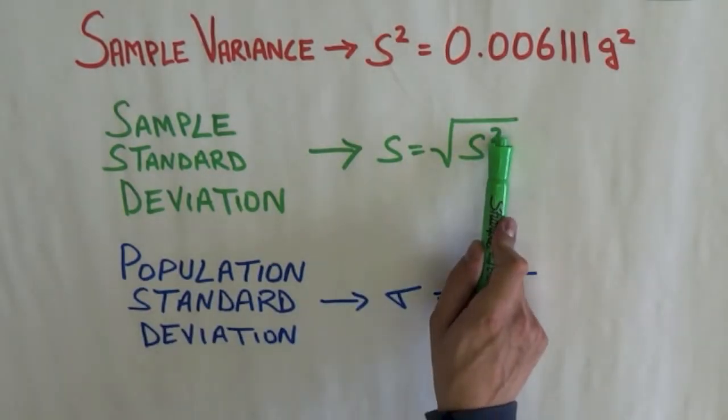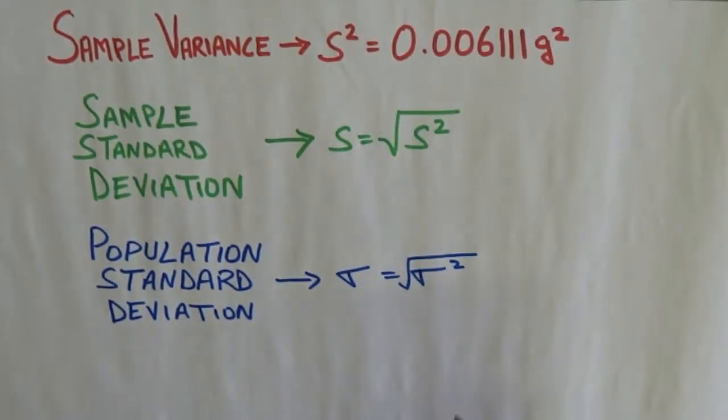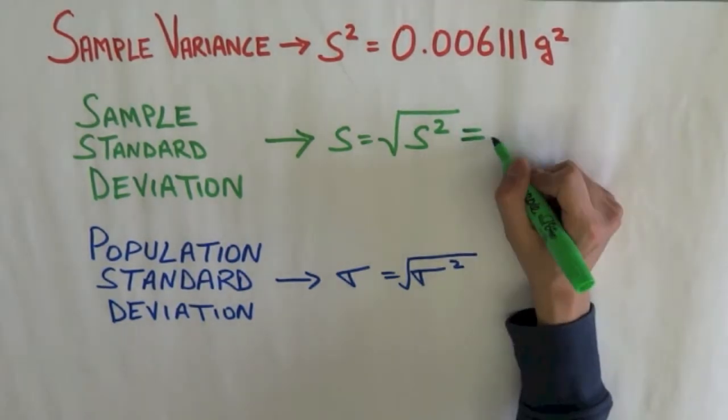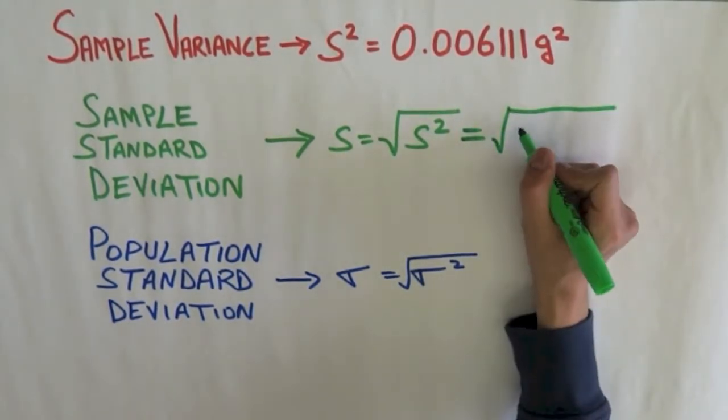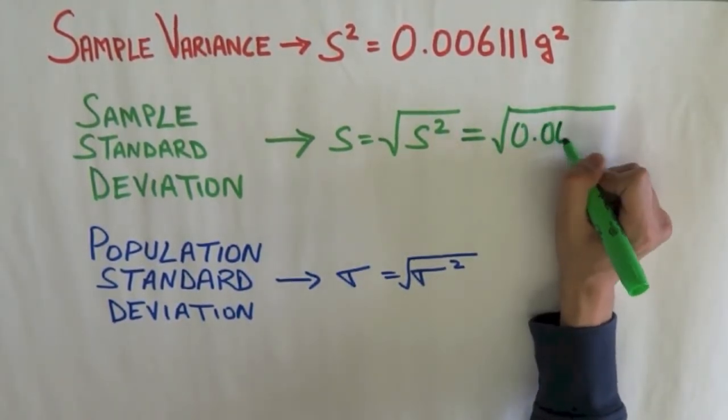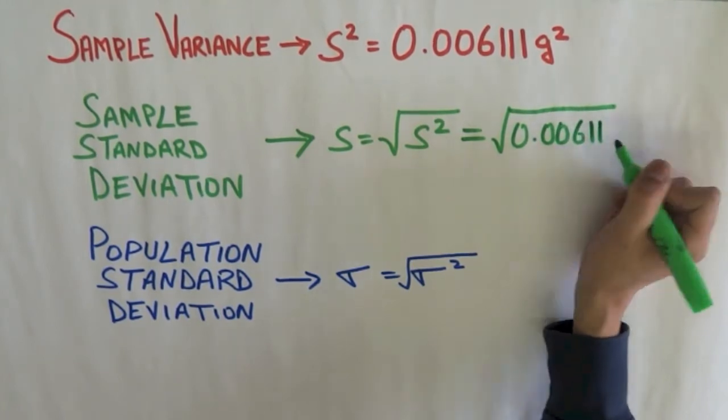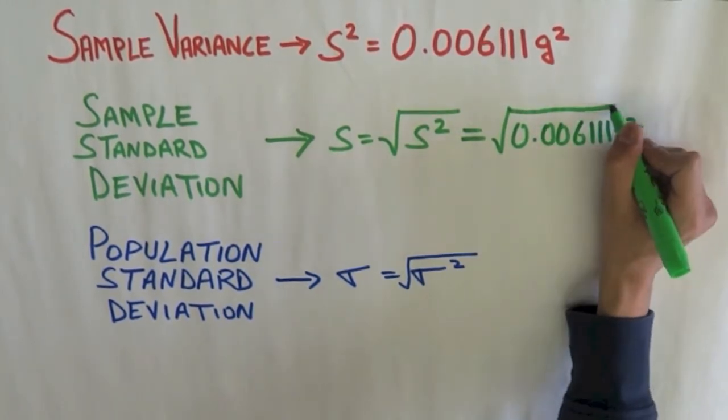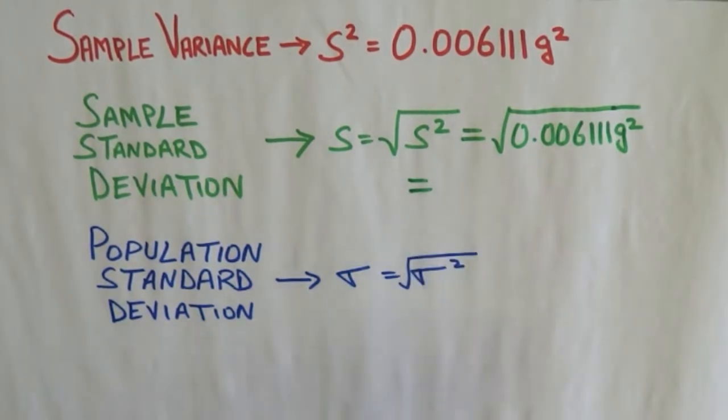My square cancels out my square root. So for our example, we can find out the square root of 0.006111 gram squared. And that gives me...